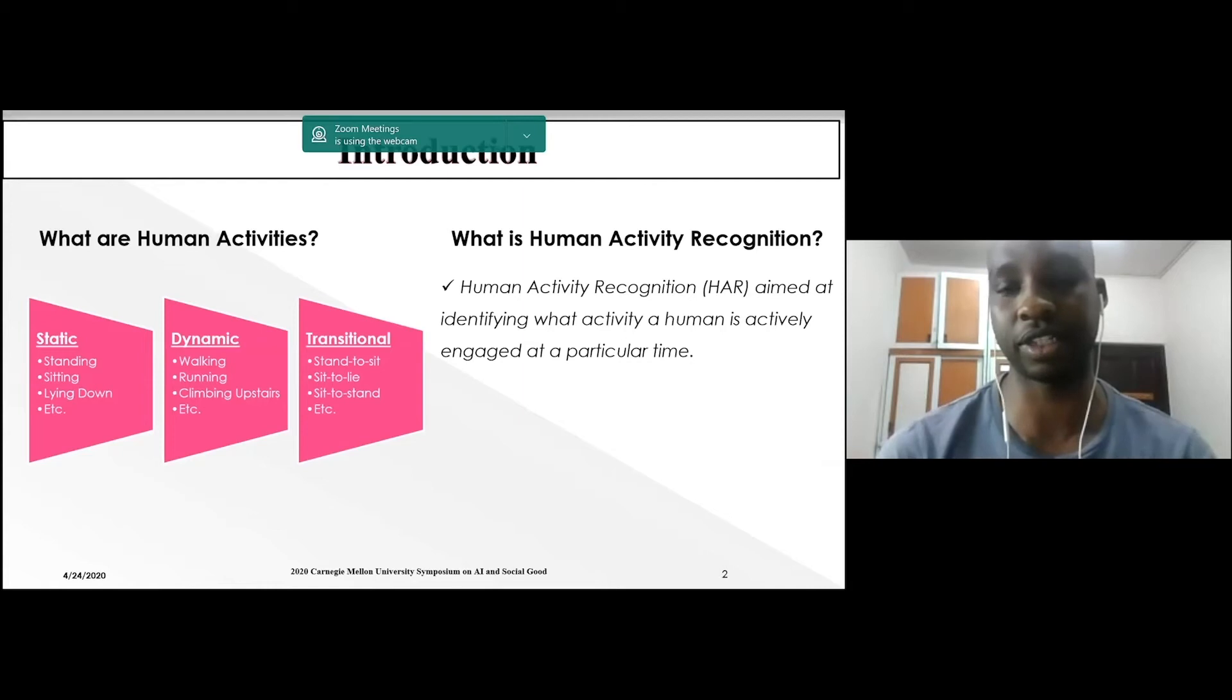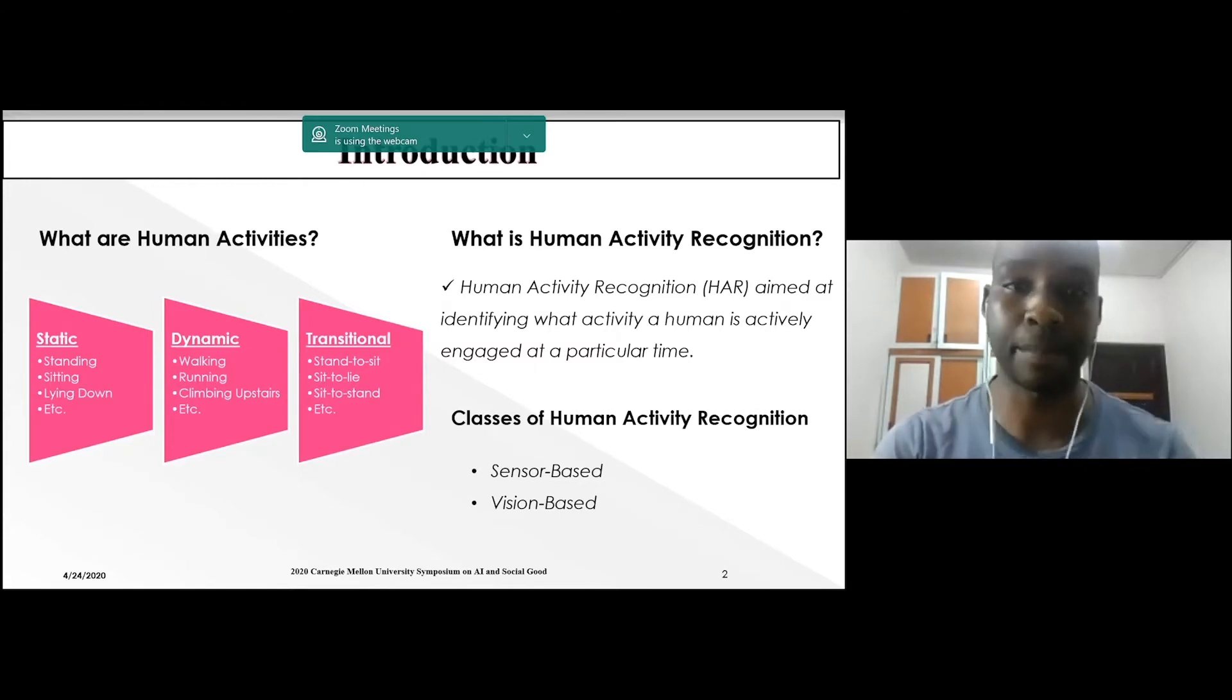I'm trying to explain what human activity recognition is. Human activity recognition is a method that identifies what activity a human being is engaged in at a particular time, which has been classified into two categories - sensor-based or vision-based. Most researchers have mentioned that sensor-based is more important because vision-based can strike against privacy, especially for elderly people. In our case, we use sensor-based.